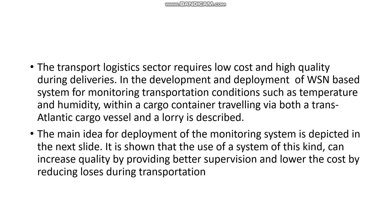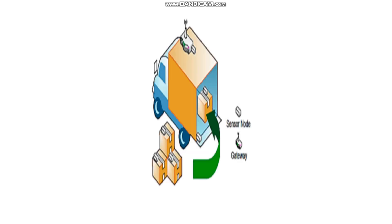Cargo containers transported by ships and lorries can be monitored using this system. As shown in the next slide, this vehicle represents a lorry with cargo containers loaded into it. Only a sensor node and a gateway are required — each cargo container has a sensor connected to it, and the lorry also has a sensor node connected to it. Finally, there is a gateway which monitors and indicates from where to where the containers have to be moved.